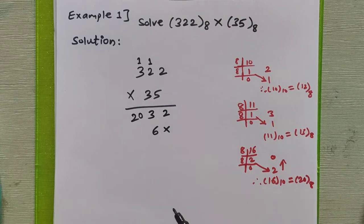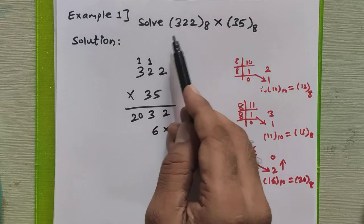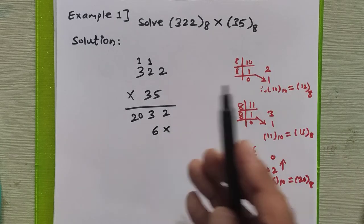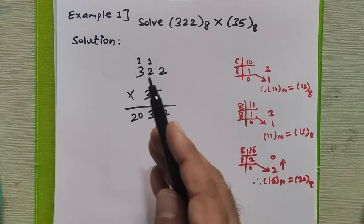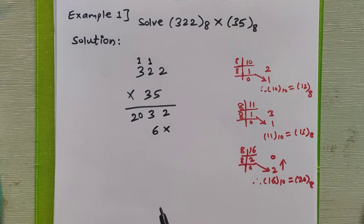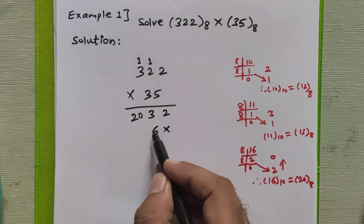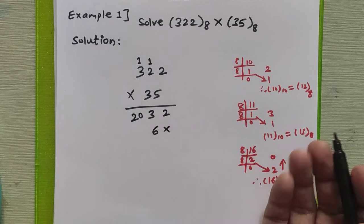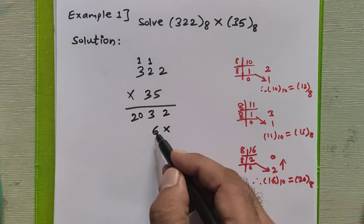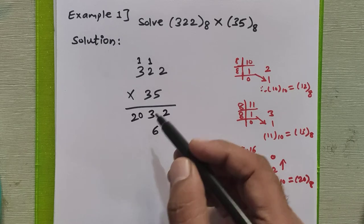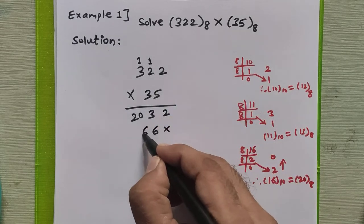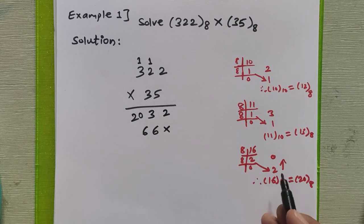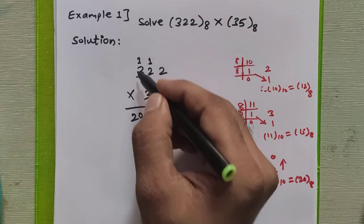6 is a valid octal digit — valid octal digits are 0 to 7. If there are invalid digits, we convert them to octal before using them in calculations. Since 6 is already valid, no conversion needed. We multiply 3 with the next 2: 3×2 is 6 again, also valid, no conversion needed. Now multiply 3 by 3.